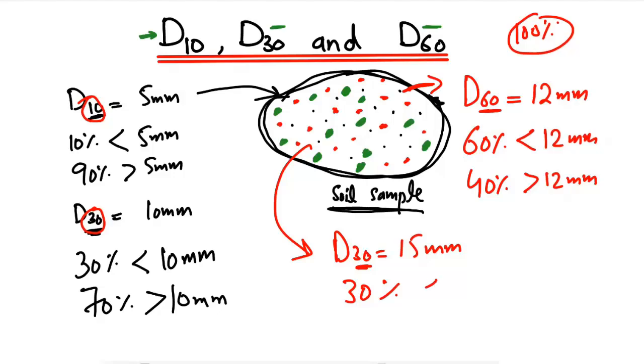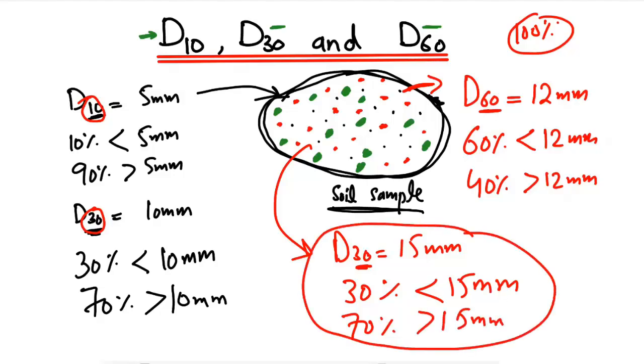You should directly write this like an equation: 30 percent is lower than 15 millimeters in particle size, and 70 percent - the remaining 70 percent - is greater than 15 millimeters. This was just an example.